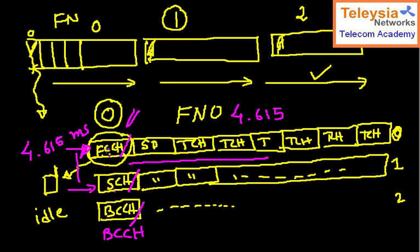To summarize: time slot number zero transmits the Frequency Correction Channel in one TDMA frame, then the Synchronization Channel in the next, then the BCCH channel — if you keep recording what information is coming, you can see the pattern the network is transmitting. The physical channel means the frequency plus a time slot. Each time slot across different TDMA frames may transmit signaling channels or TCH carrying user data.